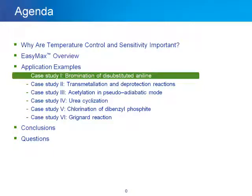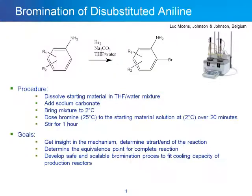Now we're going to look at our first example: a bromination of a di-substituted aniline. This example comes from J&J in Belgium. They dissolved the di-substituted aniline in THF water, added sodium carbonate, and brought the mixture to 2 degrees. They then dosed bromine, which is outside of the vessel at room temperature, to the starting solution at 2 degrees over about 20 minutes.